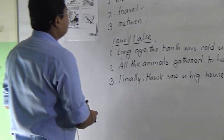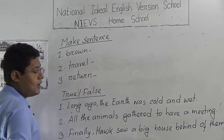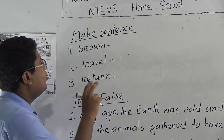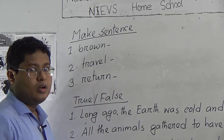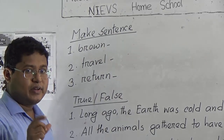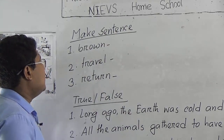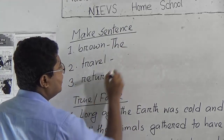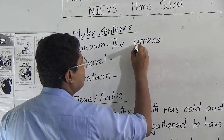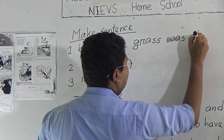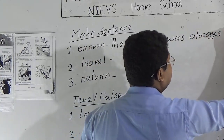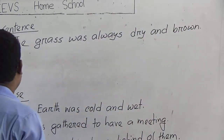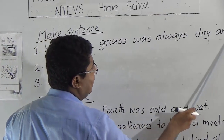So let's start the class. Make sentence number 1: brown. I told you in the last class that you don't need to follow my make sentence blindly. You can have your own make sentence, but it must have subject-verb agreement and it must have a meaning. So for number 1, brown — I can write from the text: 'The grass was always dry and brown.'